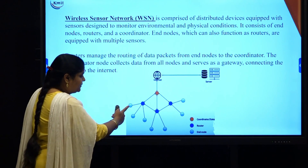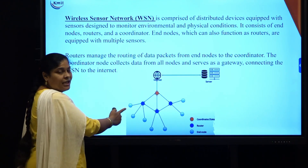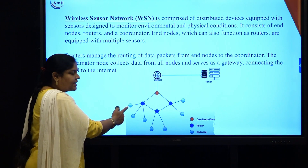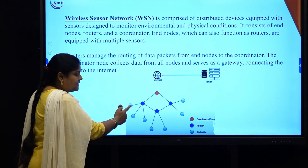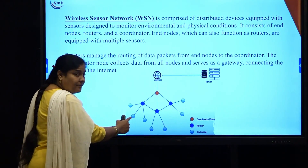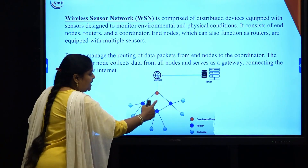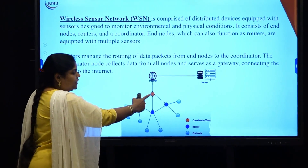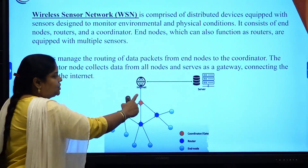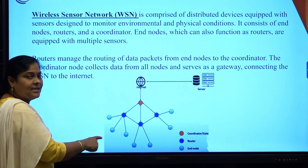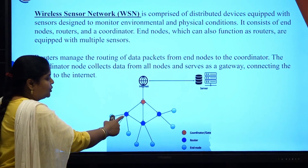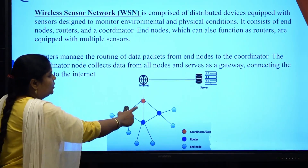In the diagram, these are called end nodes. Each end node consists of multiple sensors, from which you get multiple data continuously. The data from the sensors is coordinated to routers, and from routers the data is transferred to the coordinator. The coordinator is also called a gateway. All the data is stored in the server through the internet. The routers are responsible for routing the data packets from end nodes to the coordinator.